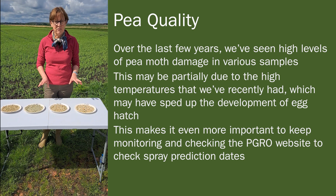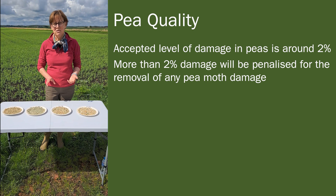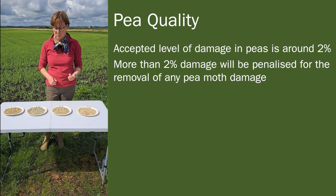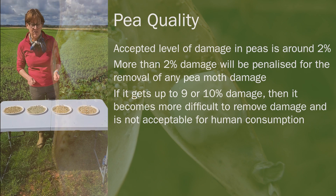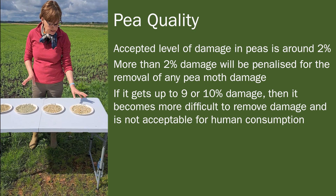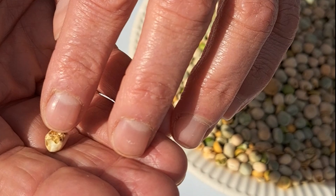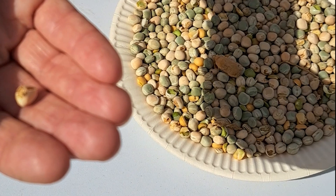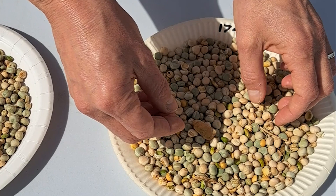We have some samples here showing different levels of damage. The accepted level of damage in combining peas is around 2% — more than that and you'll start to be penalised. Once we get up to 9% or 10% damage in the pea sample, it's quite difficult to remove that using the techniques we have. This sample here shows just over 17% damage — you can see the nibbling around the edge of the pea and quite a lot of frass left in the sample. This is not acceptable for human consumption or seed. In vining peas the tolerance level is zero, so it's really important that we monitor in vining peas as well.